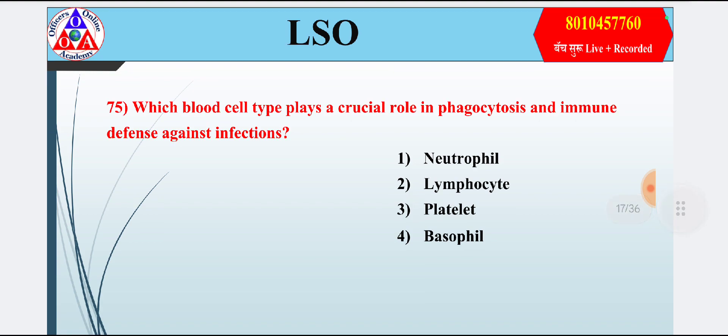Question 15: Which blood cell type plays a crucial role in phagocytosis and immune defense against infections? Option 1: neutrophil; option 2: lymphocyte; option 3: platelet; option 4: basophil. Answer is option 1 — neutrophil.